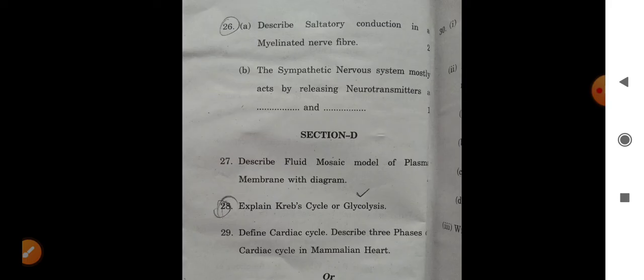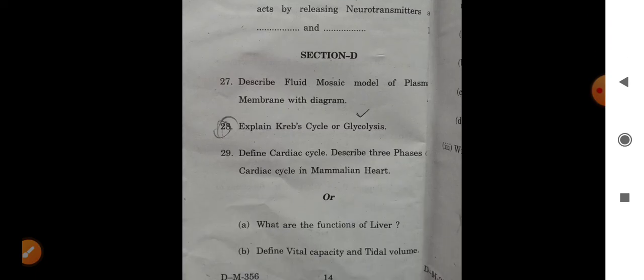Describe saltatory conduction in myelinated nerve fiber. The sympathetic nervous system mostly acts by releasing neurotransmitters. Describe fluid mosaic model of plasma membrane with diagram. Explain Krebs cycle and glycolysis. Define cardiac cycle. Describe three features of cardiac cycle in mammalian heart.